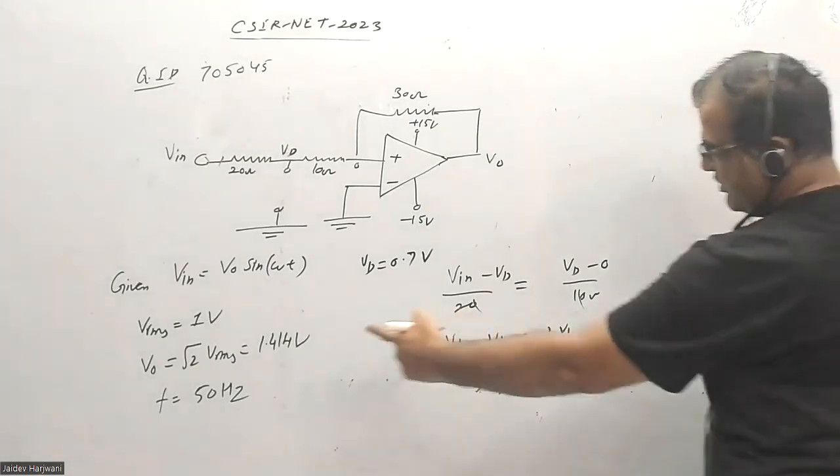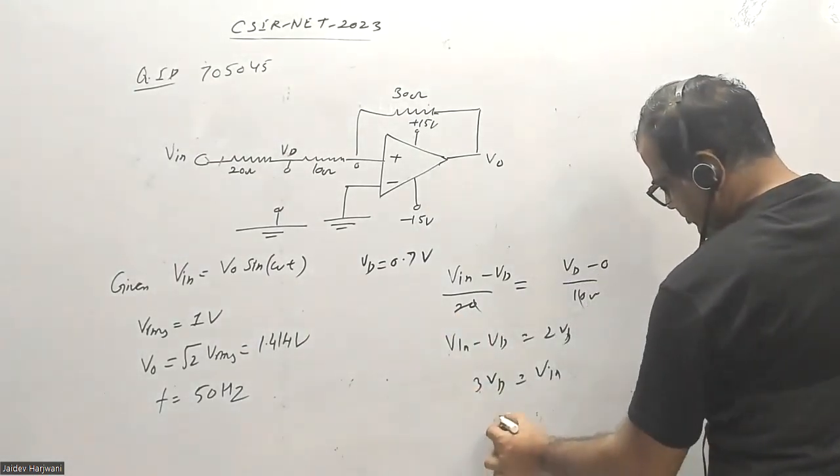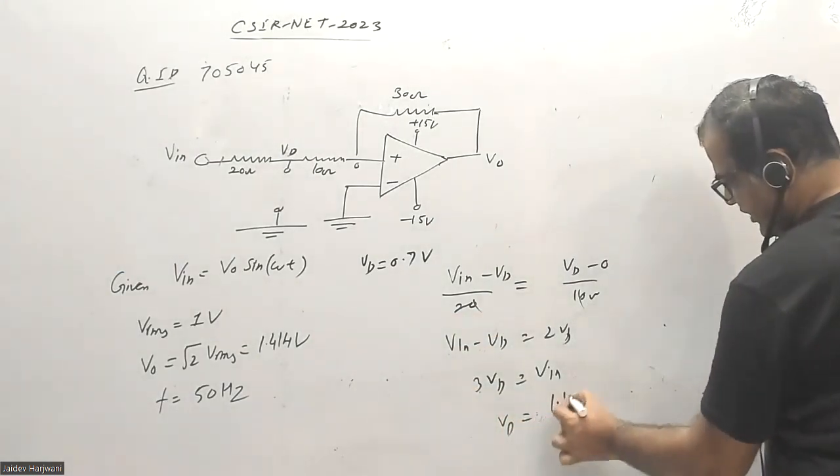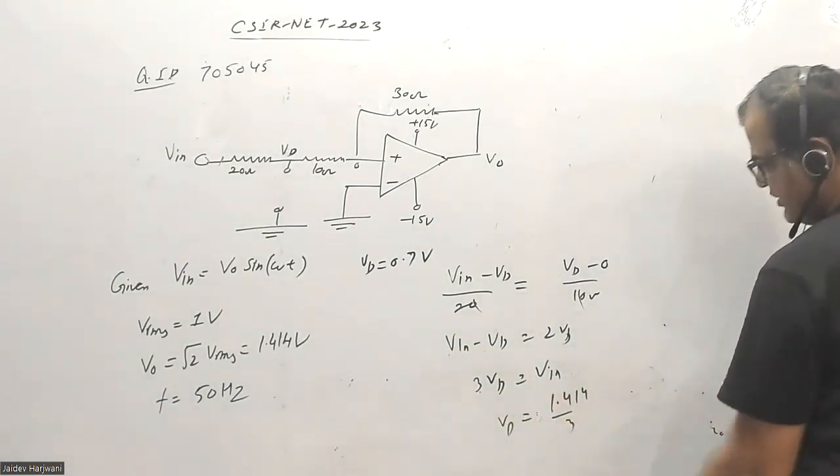So VD will be 1.414 divided by 3. Obviously, this voltage is less than 0.7 volt.